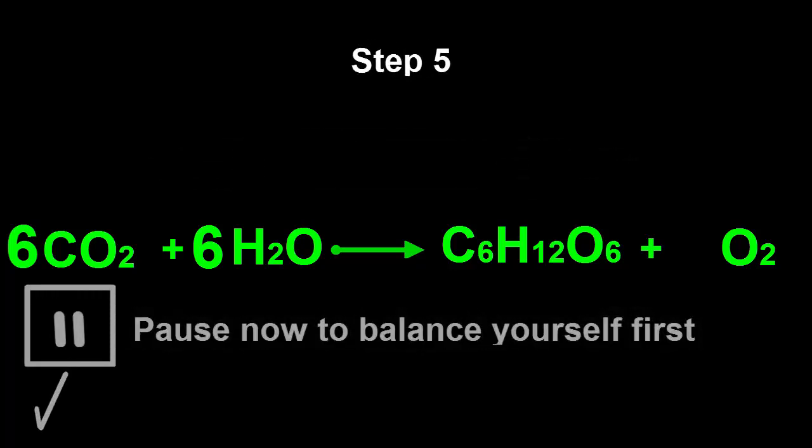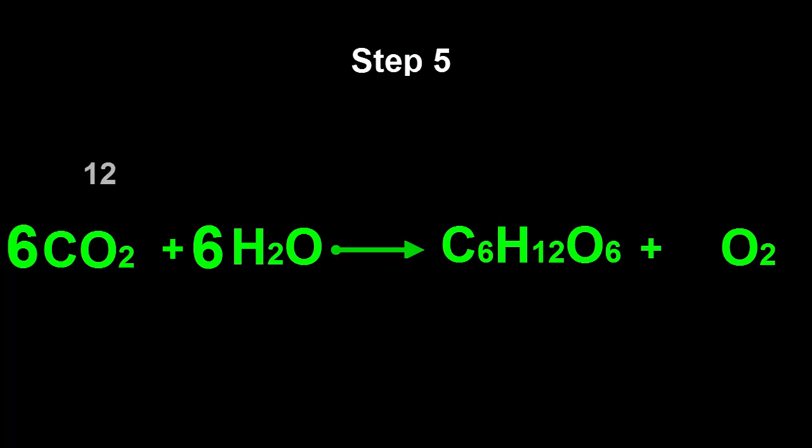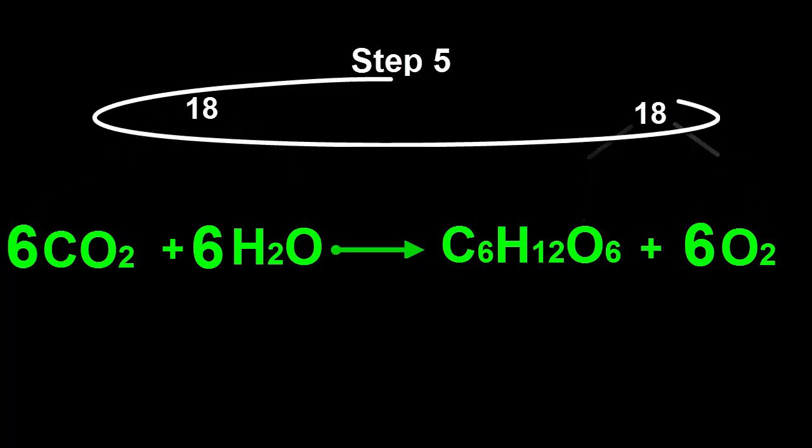Step 5: On the left-hand side there are twelve oxygen atoms inside the six carbon dioxide molecules, and six oxygen atoms inside the six water molecules, a total of eighteen. On the right-hand side there are six oxygen atoms inside the glucose molecule, so we need another twelve oxygen atoms. We can do this by putting a six in front of the O2 molecules. Now we have eighteen oxygen atoms on the right-hand side as well, and the equation is now balanced.